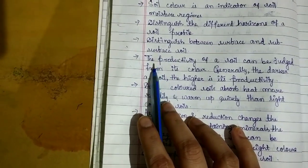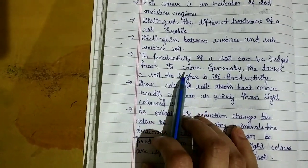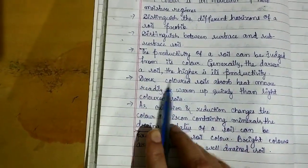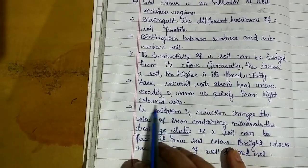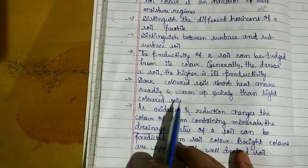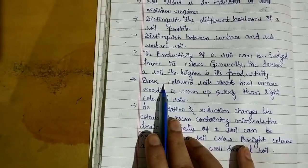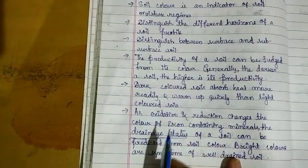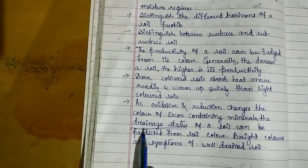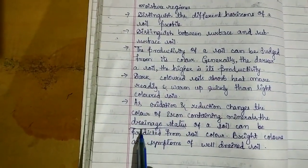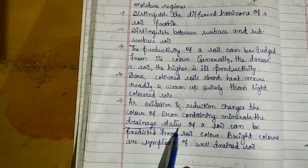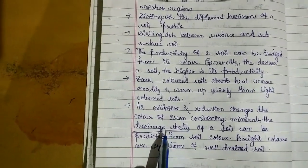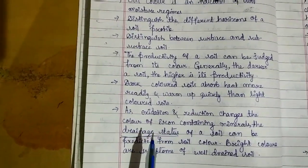We can judge soil productivity according to its color. Dark color soils absorb more heat than light color soils. If soil is dark color, they absorb much heat from the environment. We can also predict the drainage status of a soil by just watching the soil color.